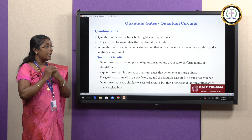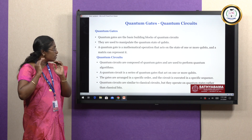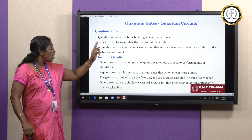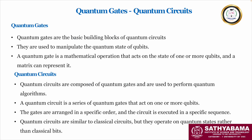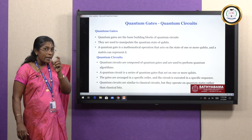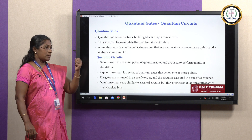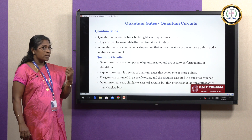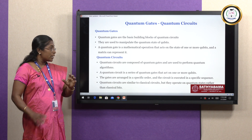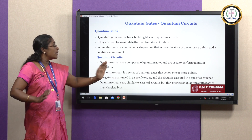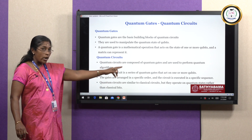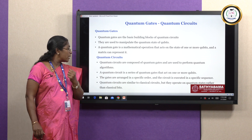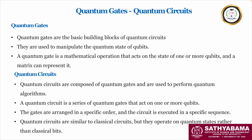Quantum gates determine how to store the data and what the nature of the state is — all those things are manipulated with the help of quantum gates. A quantum gate is a mathematical operation that acts on the states of one or more qubits and can be represented with matrices. The quantum circuit is composed of a number of quantum gates, and these quantum gates are used to perform some quantum algorithms, which can solve some complex problems.